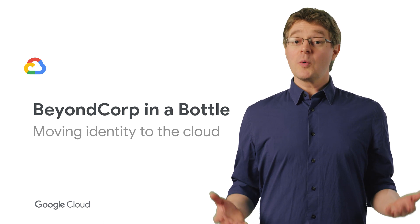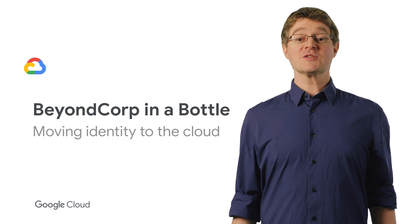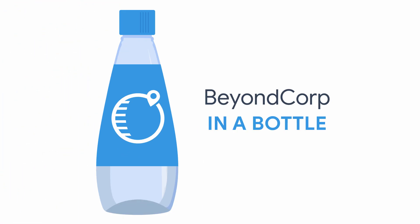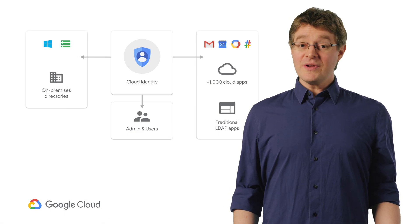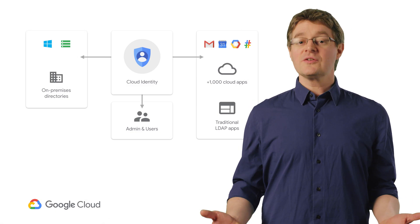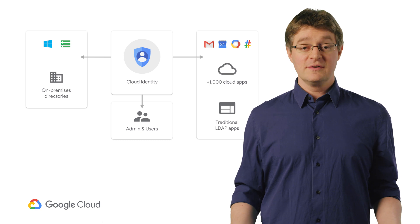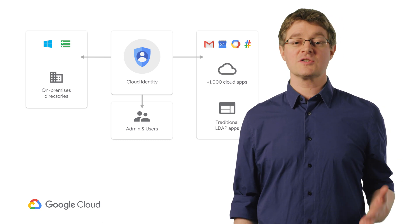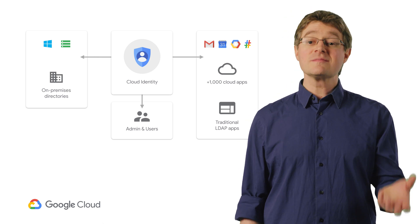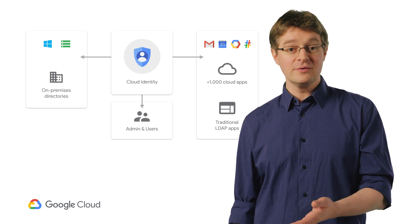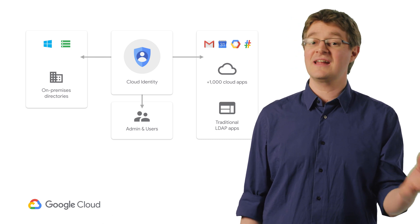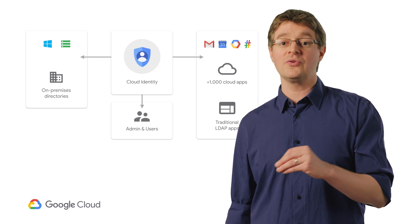Welcome to BeyondCorp in a Bottle, where we explore journeys into the world of context-aware access and zero-trust networks. You've probably got a list of employees living in Active Directory or some single sign-on or LDAP equivalent. In order to enforce your security policies and take advantage of context-aware access, you'll need to create smarter, fine-grained controls. Google's tools need to know who's asking for access, so we'll need to get that identity information into Google somehow.